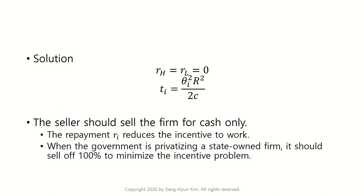As a practical example: when a government privatizes a state-owned firm, it should sell 100% to minimize the incentive problem. The purpose of privatization is to give strong incentives to the buyer. Assuming buyers reveal their types through an auction process, the most important problem is moral hazard, so the government should sell the firm to private managers to maximize the incentive to work.